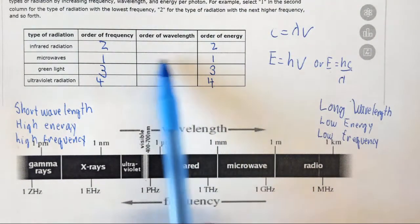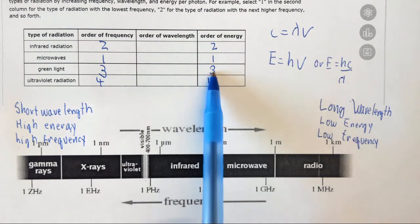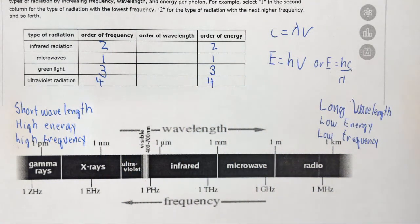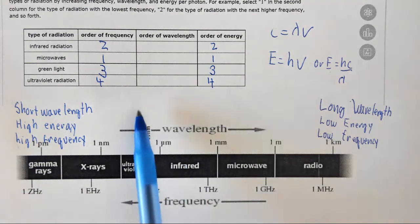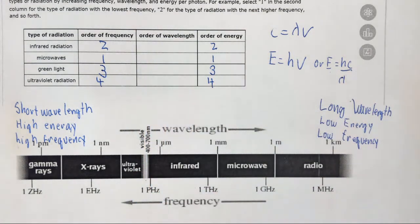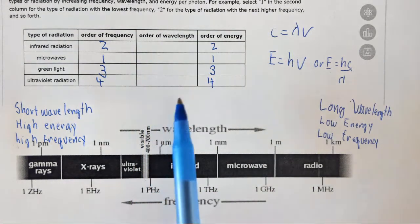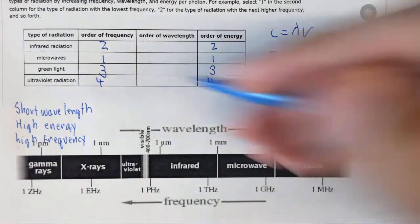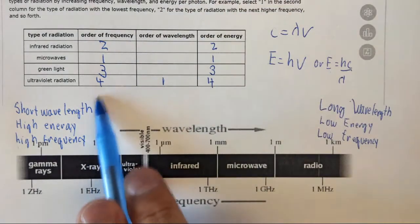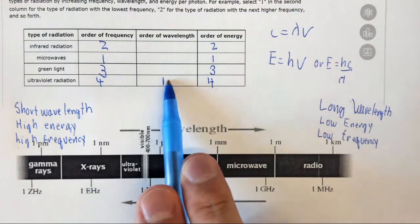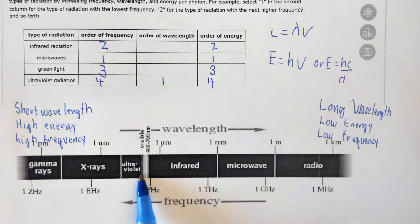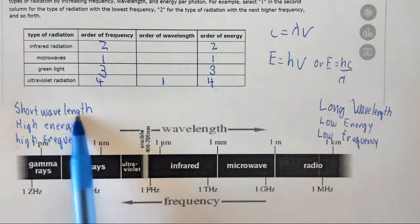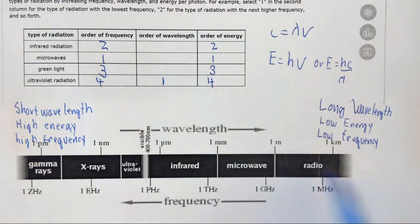Now you can do the wavelength two ways. It's either the opposite of this or you can simply do it one at a time. In this case we want to do the order of wavelength. So we want to find the shortest wavelength. Well the shortest wavelength is the highest energy. So ultraviolet is one. Notice it was four for both the frequency and the energy. Now it's one. Followed by green light, which is going to be the next shortest wavelength because here is short wavelength. So as we move in this direction the wavelengths get longer. So green light is two.